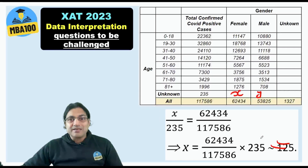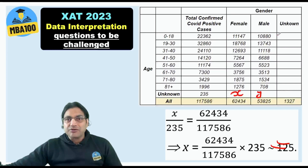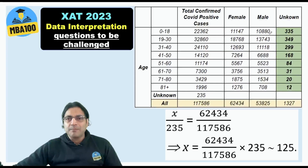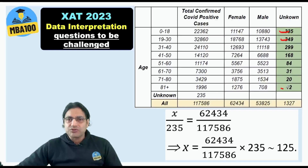But that is not the full story. We have got all these figures. How do you get the unknown figure? In the 0–18 age category, this is the total, and these are the confirmed females and confirmed males. So total minus confirmed females minus confirmed males gives you the unknown. We completed this — here you get 335, 349, and so forth, and here you ultimately get 12.